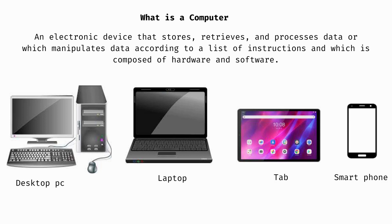The next type is the laptop. Then there is the tab and smartphone. The higher end is the tab, and the higher end after that is the laptop. The high end is the desktop PC, which is used on a table. With a laptop, we can move it — it is portable. The tab and smartphone are also portable, while the desktop PC stays in one place.